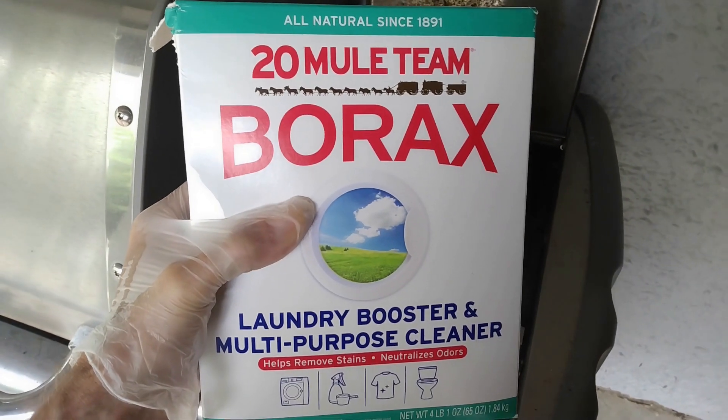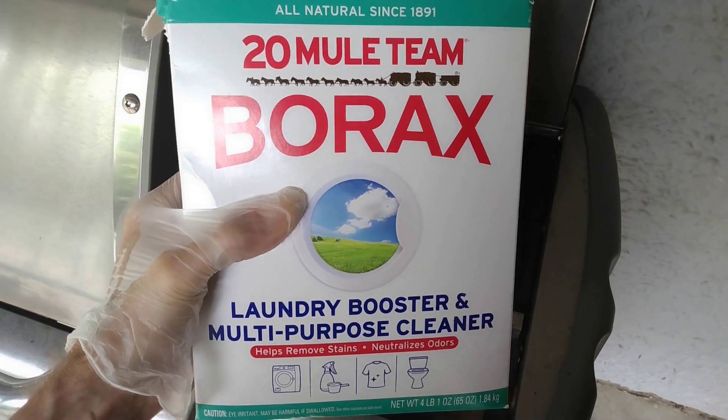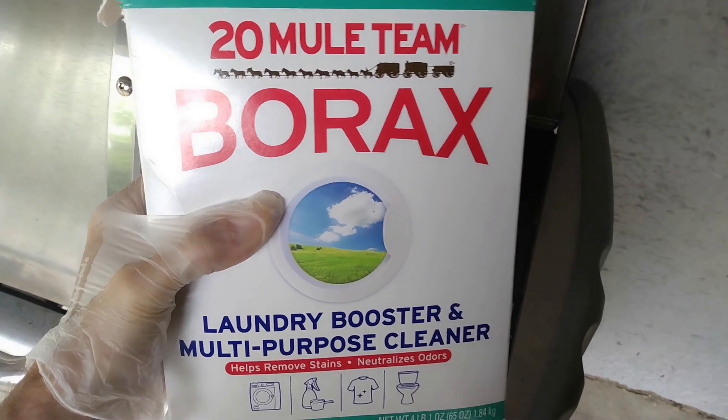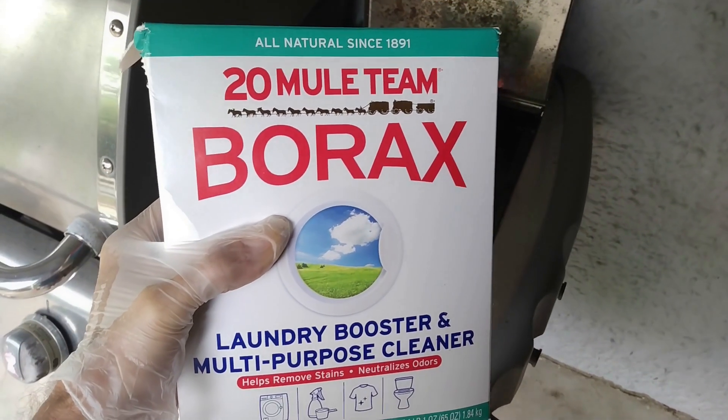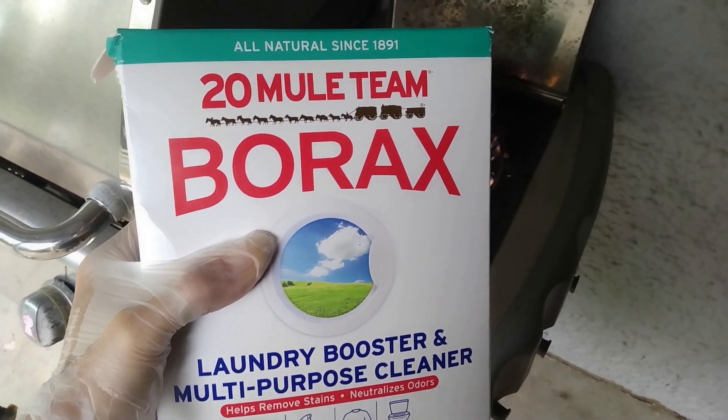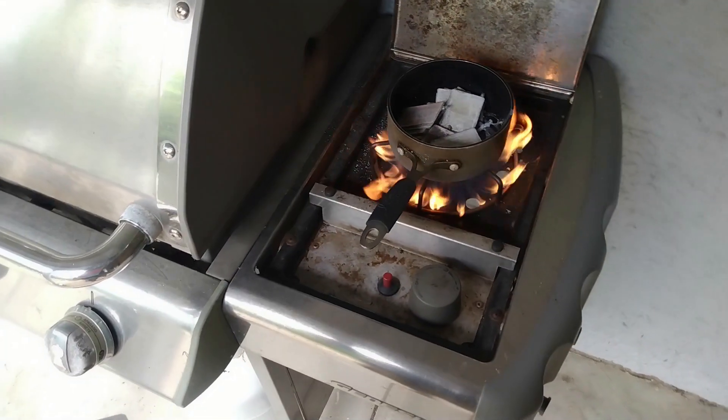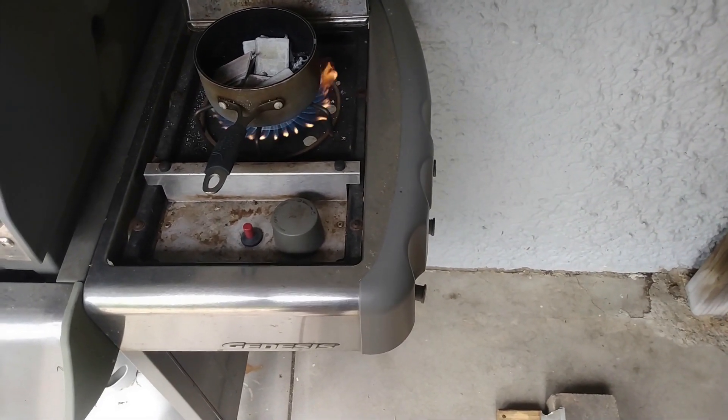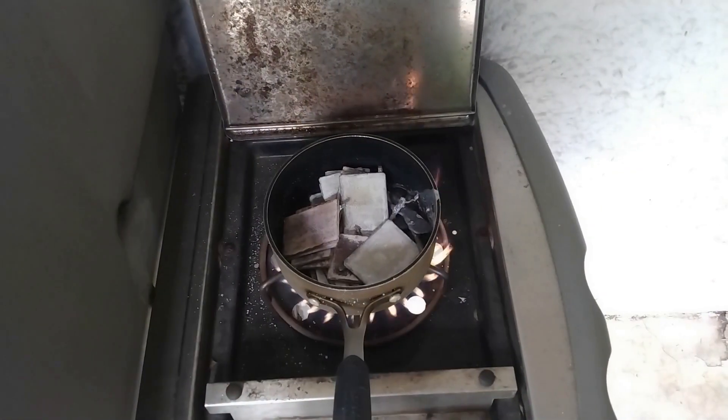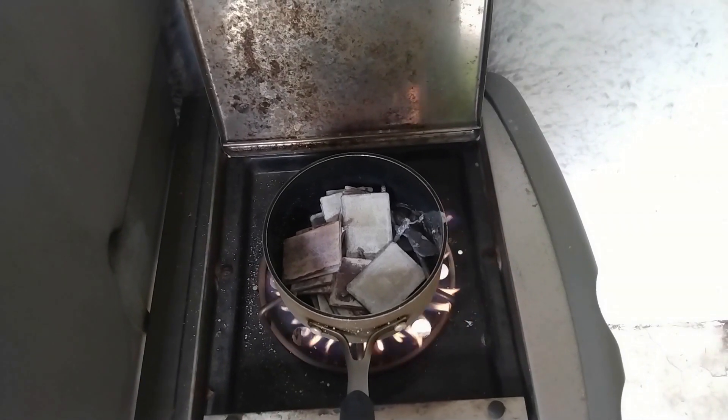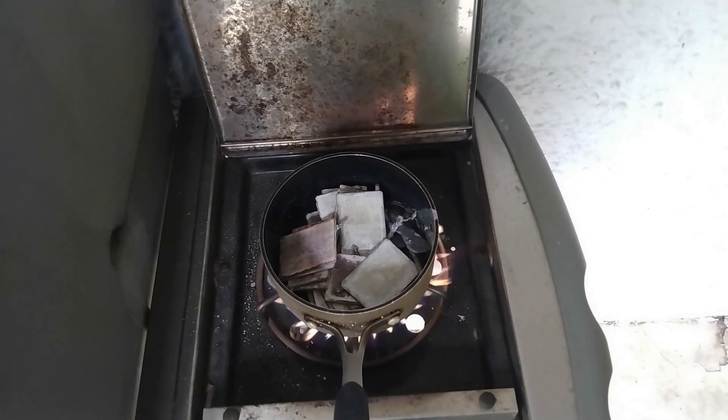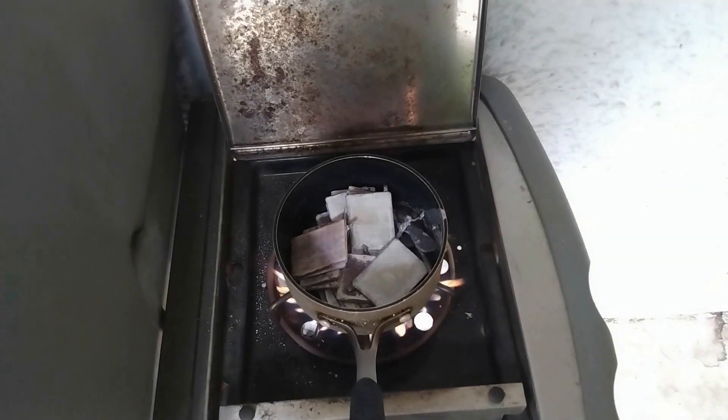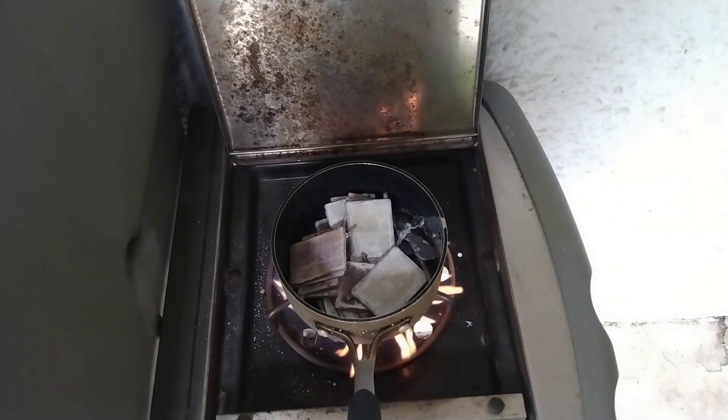Now, you may want to pour a little bit of borax onto the melted lead. That will serve as flux. It will help the lead to phase separate from the impurities and it also helps to melt it. Now, there is way too much lead for making a lead electrode, but I can keep the leftover and melt it later.